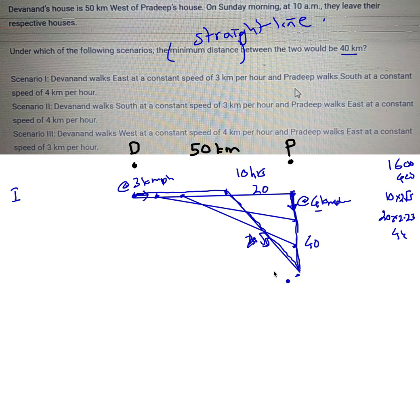Second scenario: Devanand walks south at a speed of 3 kilometers per hour, and Pradeep is walking east - mind you, Pradeep is walking east at 4 kilometers per hour.